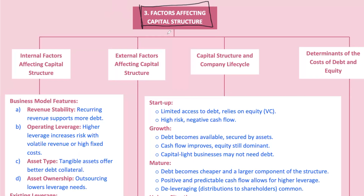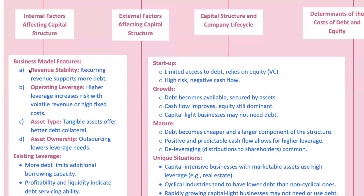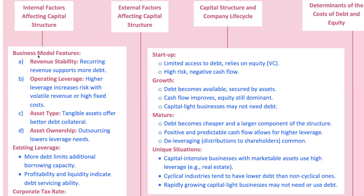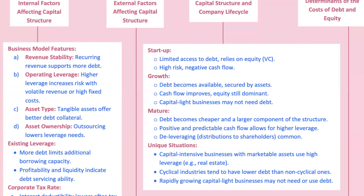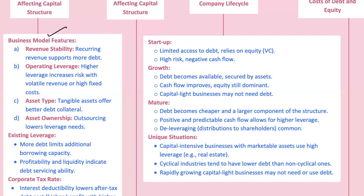Next, let's dive into the factors that influence a company's capital structure. First, business model characteristics: the nature of a company's business determines how much debt it can safely take on. Companies with stable, recurring revenues, like utilities, can afford more debt because their cash flows are predictable. Companies with volatile revenues, like tech startups, need to be cautious. Think about Netflix — its subscription-based model provides stable and predictable revenue, allowing it to take on substantial debt to finance new content. Compare that with a startup like Snapchat, which might rely more on equity.